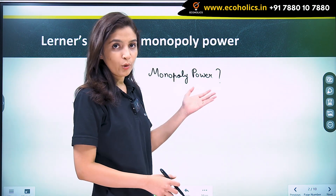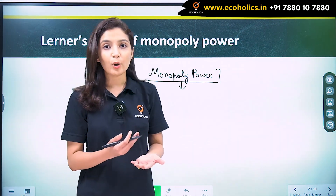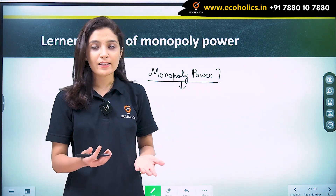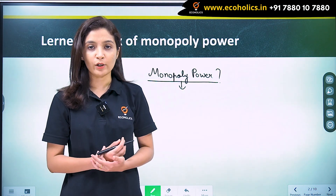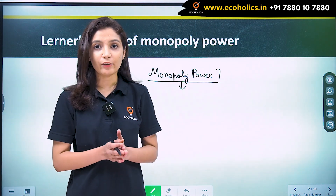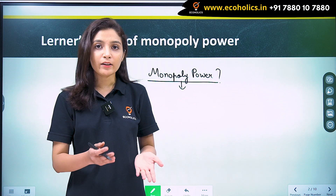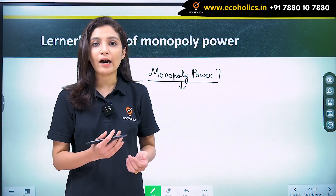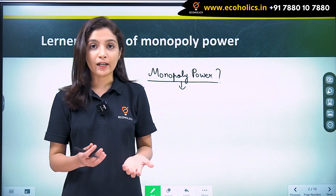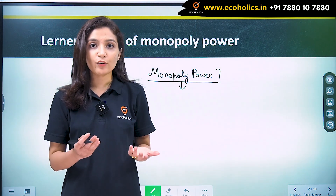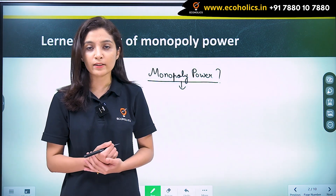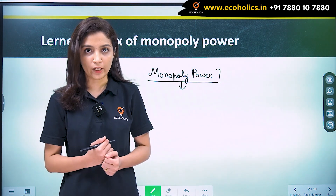What is monopoly power? Monopoly power tells us how much a producer or seller has control over the price and quantity of a product. It is not just in case of pure monopoly that we have monopoly power. In other market structures also, we have monopoly power, but the difference is only in the degree. In oligopolistic market structure and also in monopolistic competition, we have monopoly power.